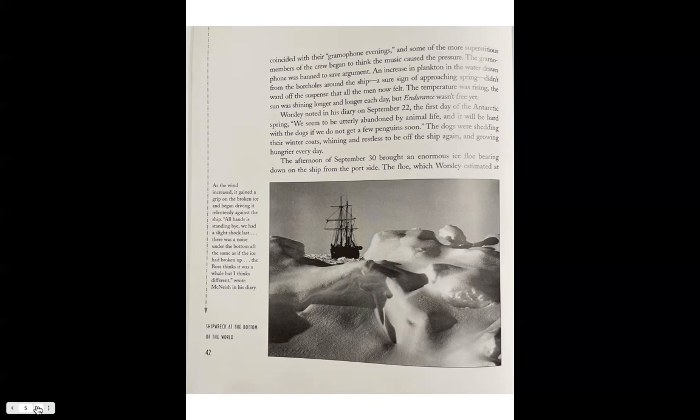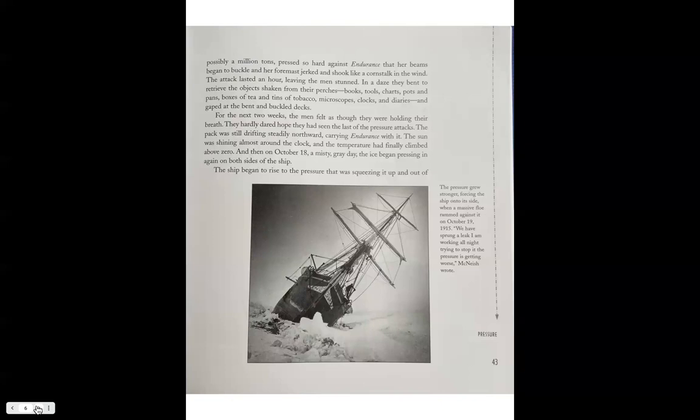The afternoon of September 30th brought an enormous ice floe bearing down on the ship from the port side. The floe, which Worsley estimated at possibly a million tons, pressed so hard against Endurance that her beams began to buckle and her foremast jerked and shook like a corn stalk in the wind. The attack lasted for an hour, leaving the men stunned. For the next two weeks, the men felt as though they were holding their breath. They hardly dared hope they had seen the last of the pressure attacks.